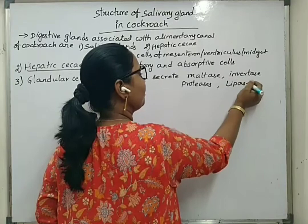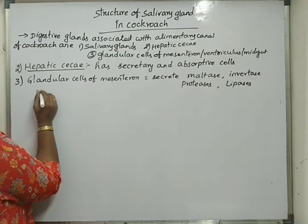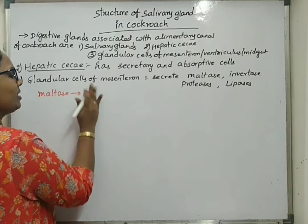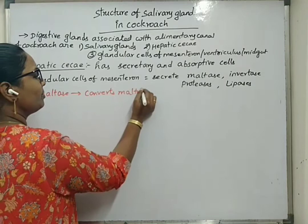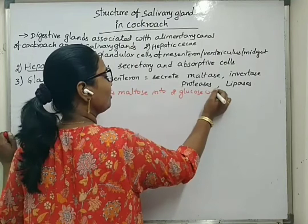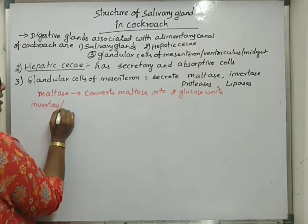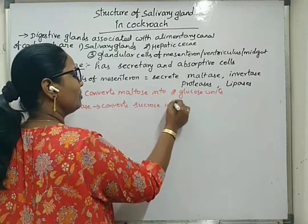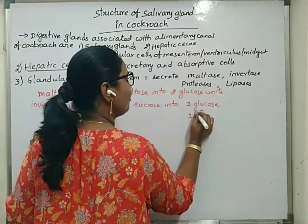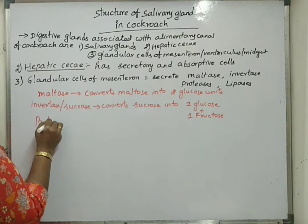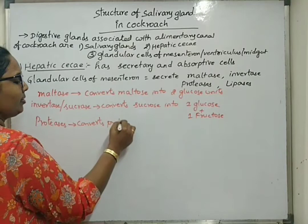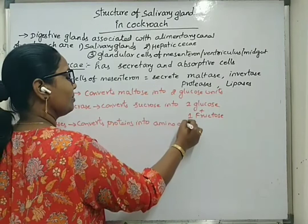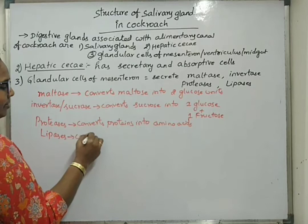Maltase converts maltose into two glucose units. Invertase, also called sucrase, converts sucrose into one glucose unit plus one fructose unit. Proteases convert proteins into amino acids. Lipases convert lipids into fatty acids and glycerol.